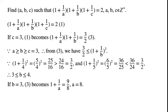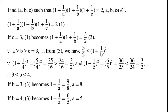If b = 3, equation 3 becomes 1 + 1/a = 9/8, so a = 8. If b = 4, equation 3 becomes 1 + 1/a = 6/5; by rearranging, a = 5.